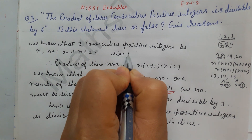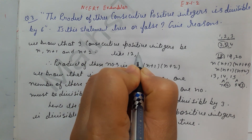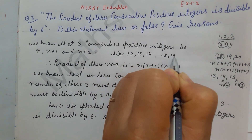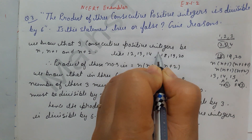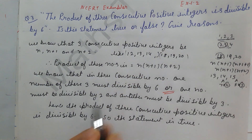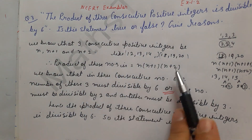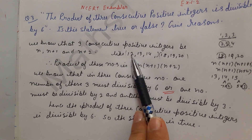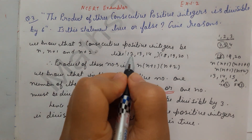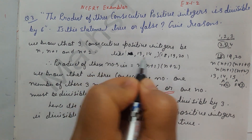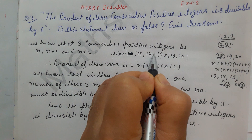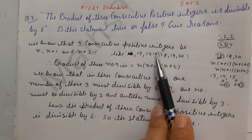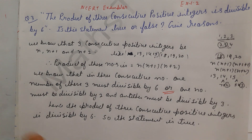Let's take any numbers, like 12, 13, 14 or 18, 19, 20. In the first pair 12 is divisible by 6, and in the second pair 18 is divisible by 6. Now take 13 and 14 — no one is divisible by 6, but 14 is divisible by 2, and 15 is divisible by 3.